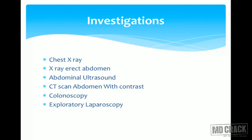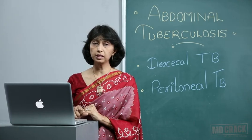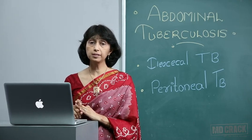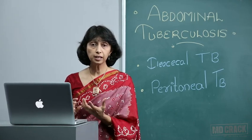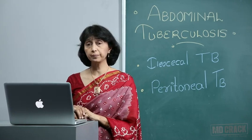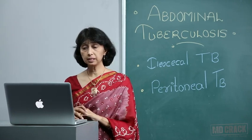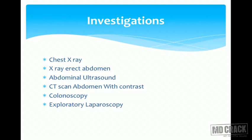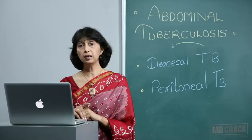Investigations include a chest X-ray to rule out past or present active pulmonary tuberculosis. Ultrasonography of the abdomen evaluates lymph nodes, the ileocecal mass, fluid, adhesions, fibrosis, and dilated bowel loops. An erect X-ray of the abdomen assesses obstruction by showing air-fluid levels. CT scan of the abdomen with contrast helps to further delineate the pathology.